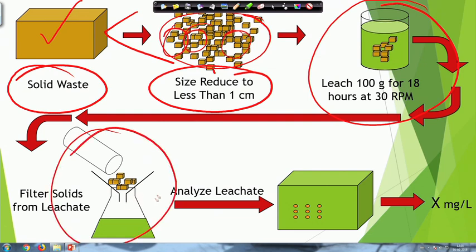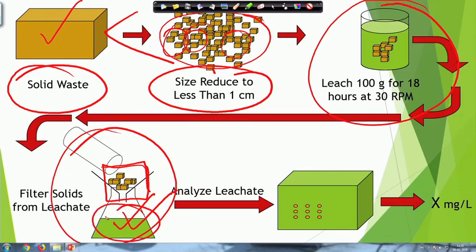Once you have that, you filter — separating solid from the leachate. We are interested in the liquid phase, so we analyze the leachate using an instrument and get a concentration of, say, certain milligrams per liter. This concentration is important in terms of looking at what is the potential risk of having this electronic waste — for example, x milligrams per liter of lead, which is one of the most common contaminants we encounter in electronic waste.